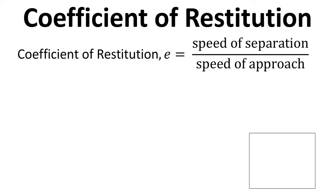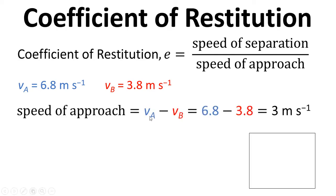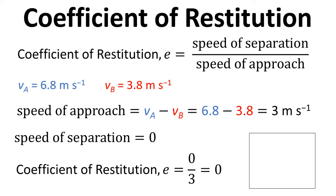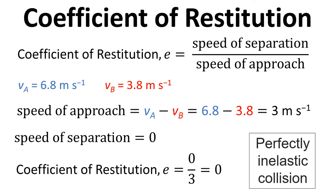In terms of the coefficient of restitution, this is the ratio of the speed of separation to the speed of approach. The speed of approach is VA minus VB, so 6.8 minus 3.8 meters per second, giving a speed of approach of 3 meters per second. The speed of separation is 0 because the blocks stuck together, so the coefficient of restitution is 0 divided by 3, which equals 0. And that's always true for a perfectly inelastic collision.